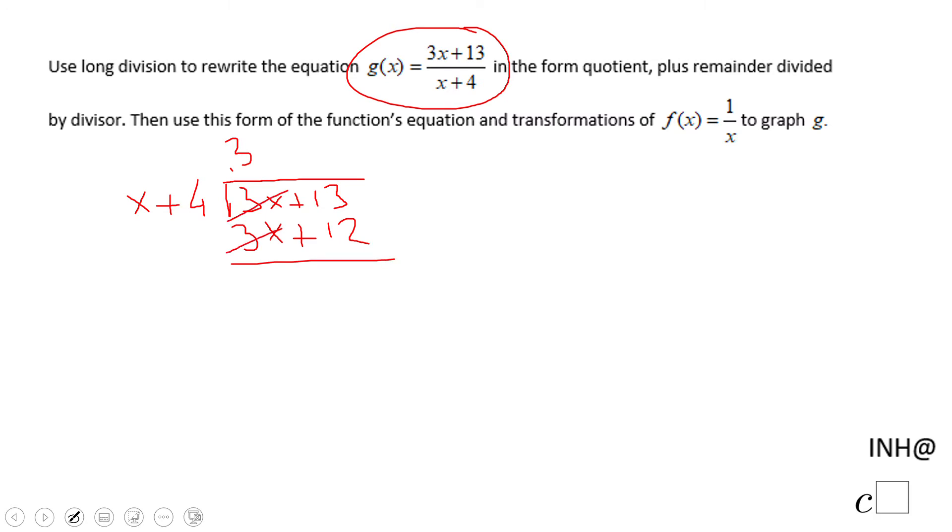3x is gone. 13 minus 12 is 1. This is the remainder. So let me write here g(x) in a different format. g(x) will be 3—this is